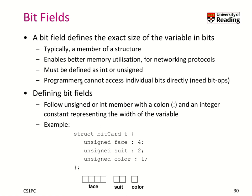At last, we look at bit fields. A bit field defines the size of the variable in bits, and it can be stored inside a structure. It's often used particularly for networking protocols when you really want to deeply access hardware. You can use it for unsigned or signed integers. So here we have a structure bit_card_t, and we said we want to store phase as an unsigned integer with four bits, suit with two bits, and color as one bit. The bits are consecutive in memory, but there might be a gap inside — the only difference is that you use a colon and specify the number of bits.